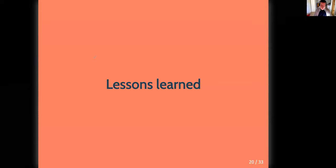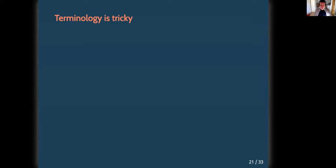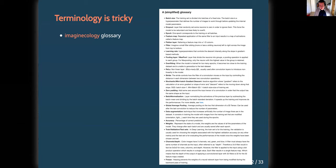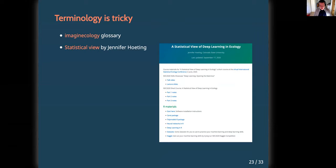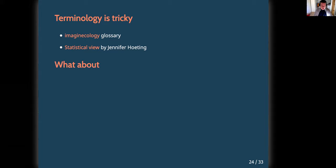As a way to end this short talk, let me go through a few lessons I learnt along the way. First, terminology is tricky — it can be an obstacle. On the Imagine Ecology website, you will find a glossary that might help. I also recommend exploring the material shared by Jennifer Hotting and the video of her talk at the last International Statistical Ecology Conference, as the viewpoint of a statistician is useful to make parallels with familiar vocabulary.